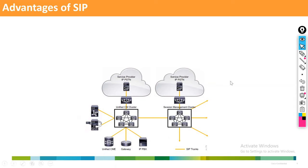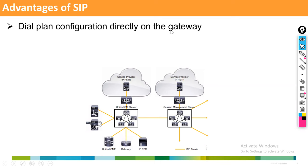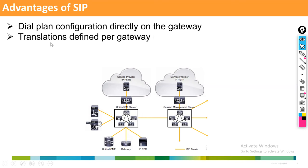One advantage is that dial plan configuration is done directly on the gateway. If the router is configured as a SIP gateway, incoming calls from the provider terminate on the gateway, so dial peers are created on the gateway itself. In MGCP, dial peers are configured from CUCM, but in SIP each individual dial peer is created on the gateway — one call leg comes in, then another goes out to CUCM.